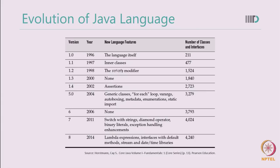This is a simple chart showing the evolution of the Java language. Since Java started in 1996, it has grown tremendously. The initial version of Java only had around 211 Java classes, while the current version has around 4,240 Java classes. This is tremendous growth, ensuring that Java remains a very valuable programming language for today's programming scenarios.